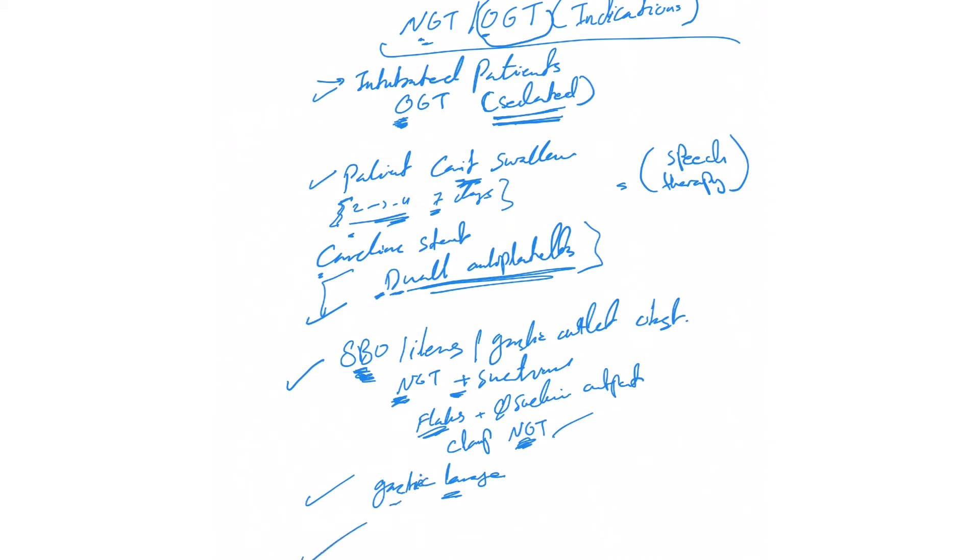The other scenario you will see also in NG tube mainly is post-op patients. And this is usually, sometimes we agree, sometimes we disagree with the indication, but it's usually mainly by general surgery. So usually we let them handle that. Don't remove it on your own. Always touch base with them if you feel the patient doesn't need it, and always get their okay, so they don't get mad, or sometimes they know better than us. So these are the main really situations that you will be encountered while taking care of patients in ICU or in the wards where you may start thinking about an NG or OG tube.